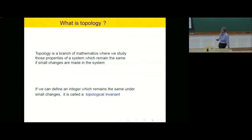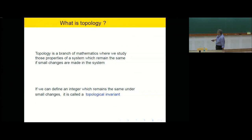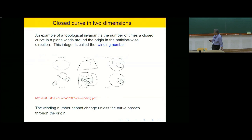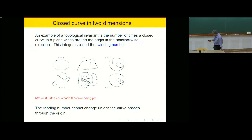So what is topology? It's a branch of mathematics where we study certain properties which remain the same if you make certain small changes in the system. If you can define an integer which remains the same under these small changes, we call it a topological invariant. The simplest example: suppose you have a plane and you consider a closed curve, a loop in the plane, and there is a particular point — the origin. Then the number of times the closed curve winds around the origin in the anticlockwise direction is called the winding number, and that's a topological invariant.